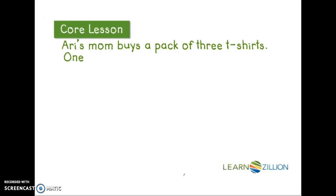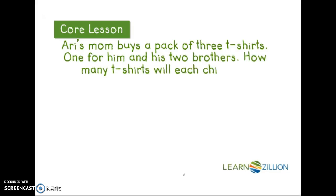Let's take a look at our original questions. Ari's mom buys a pack of 3 t-shirts, one for him and his 2 brothers. How many t-shirts will each child get? Well, this is asking, what is 3 divided by 3? We know that any number divided by itself is 1. The answer is each child will get 1 shirt.